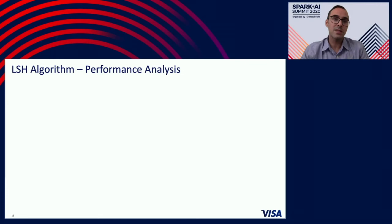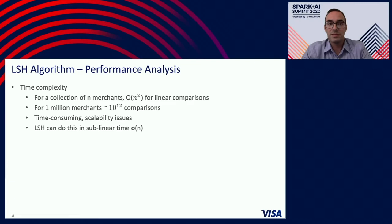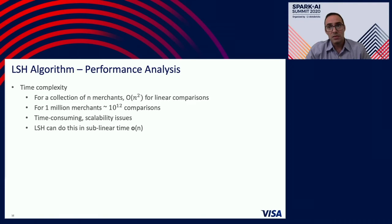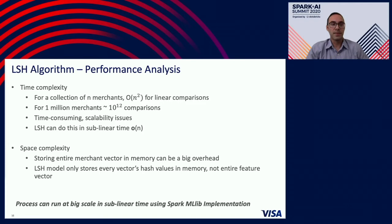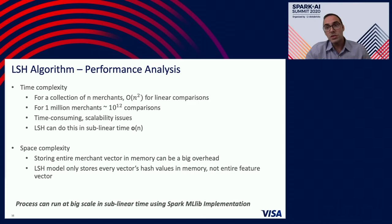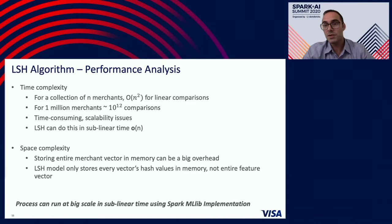Let's look at some performance analysis. For a collection of N merchants, the time complexity for linear comparison would be order N squared. For example, if you have 1 million merchants, we might end up doing 10 to the power of 12 comparisons, which is a lot, time-consuming, and creates scalability issues. Versus when we use the Apache Spark implementation of LSH, it can be done in sublinear time. Similarly for space complexity, storing the entire merchant vector — which is 1000-plus fields — creates a very big memory overhead. Versus when we use the LSH model, we are only storing the hash values, which is the low-dimensional projection, significantly reducing memory overhead. With Spark MLlib's implementation of LSH, we can run this process at big scale in sublinear time.